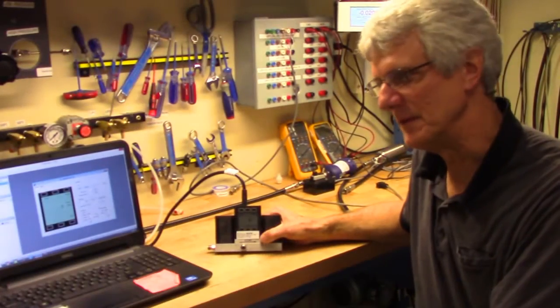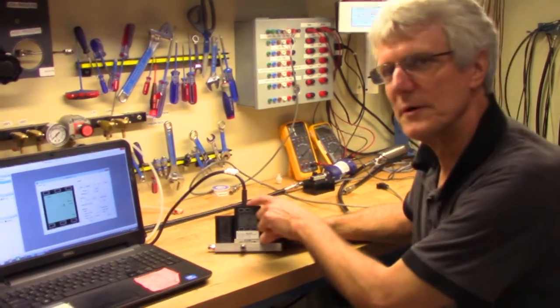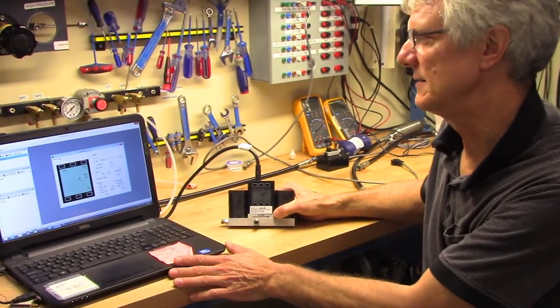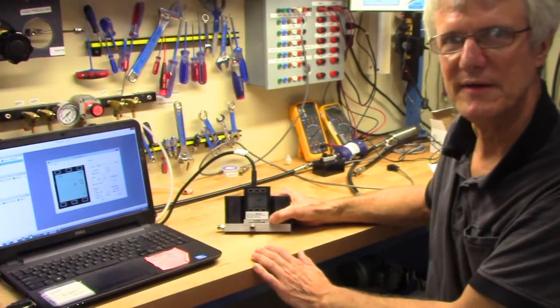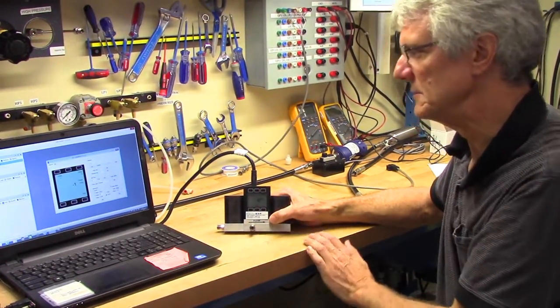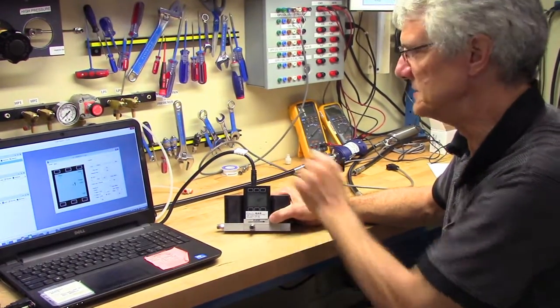The second method for controlling the PID loop on the EPR 3000 is through the serial port and using appropriate software on a PC. In this case, we're using the FlowVision software, which has an option for changing all the values. But in order to communicate with the computer, you need to change the control setup from the front panel to the RS-232 port.